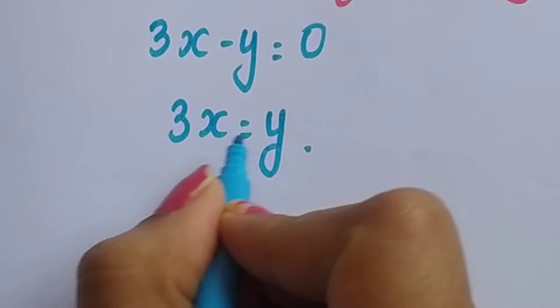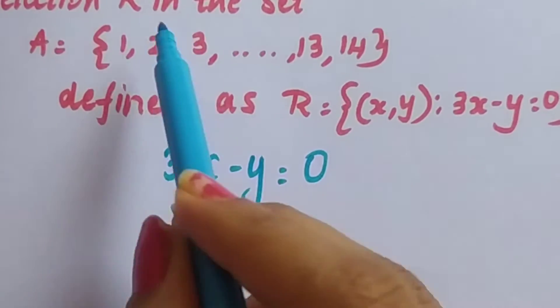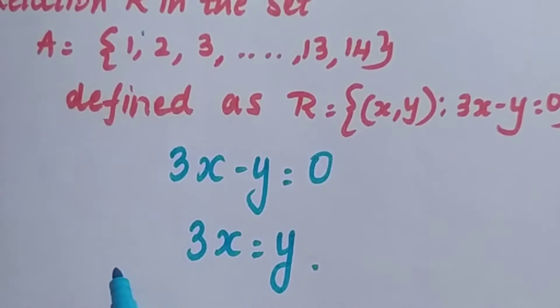Now let us write all the elements. That means whatever elements I put here, they both should be equal.